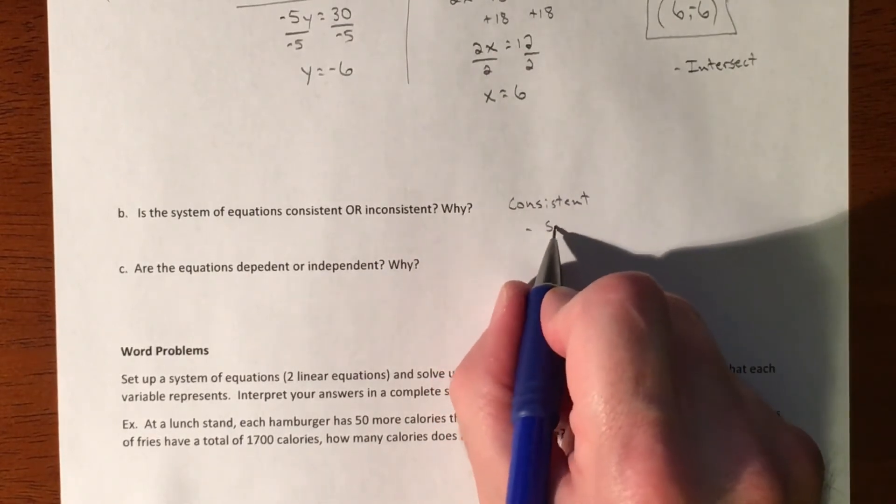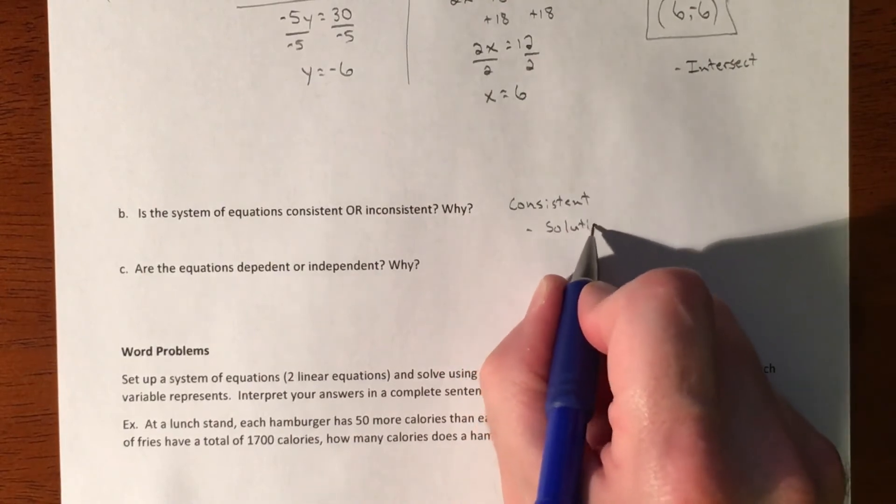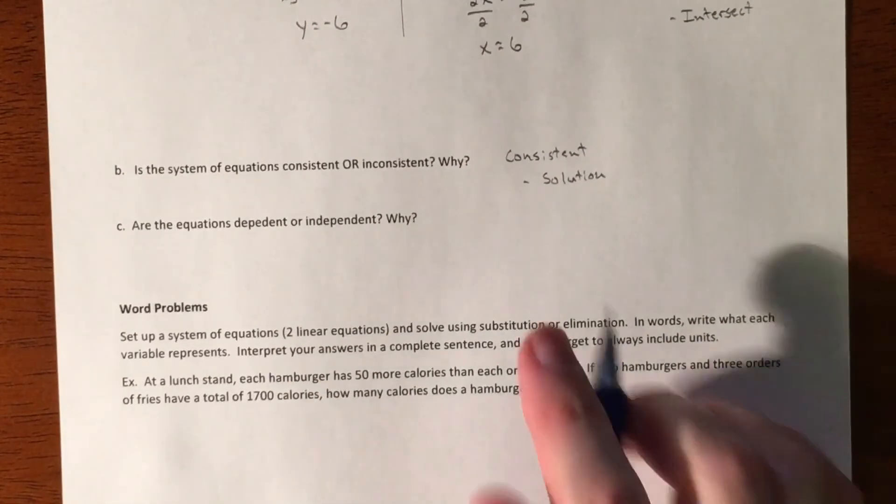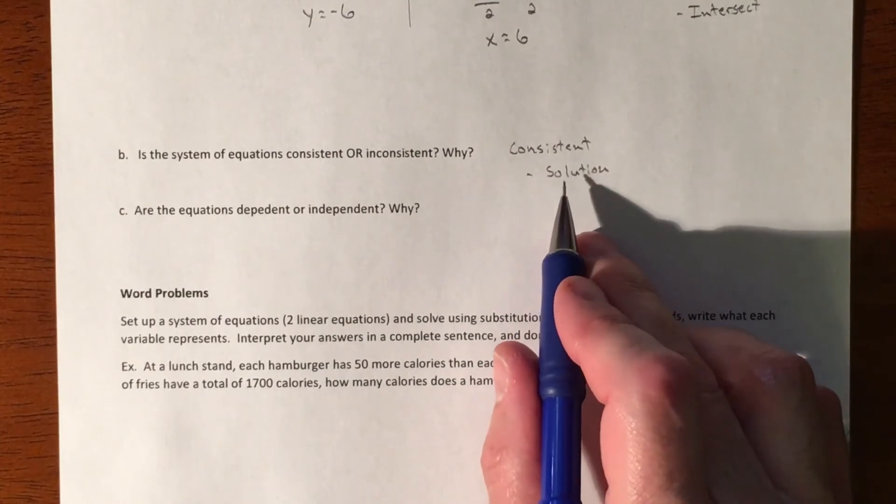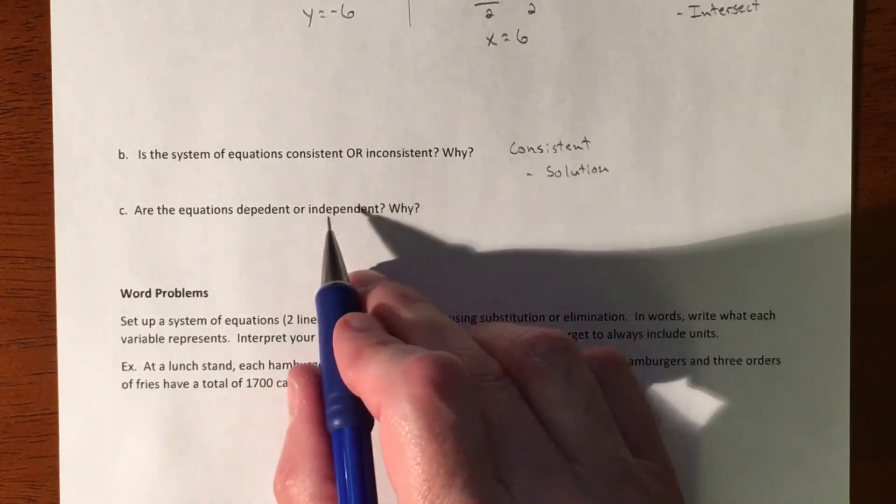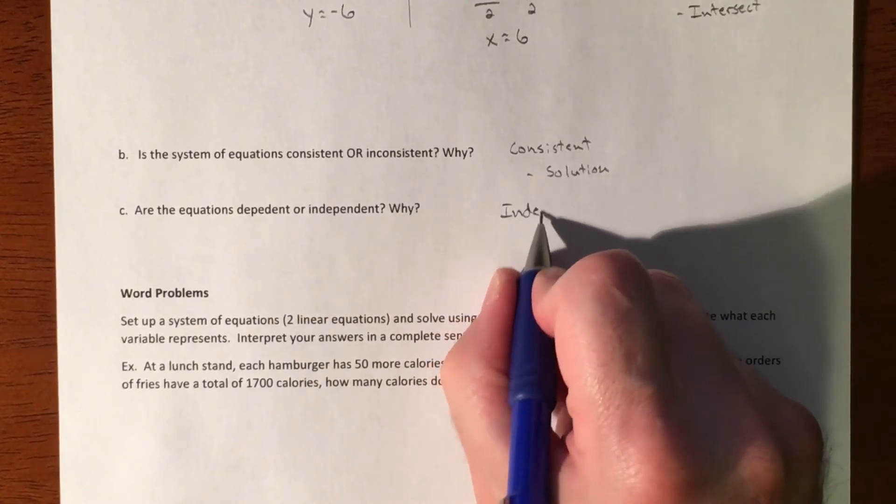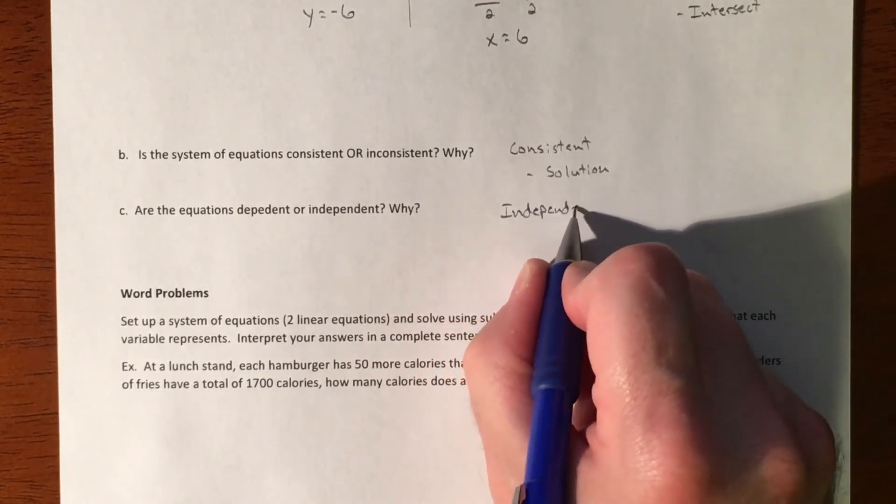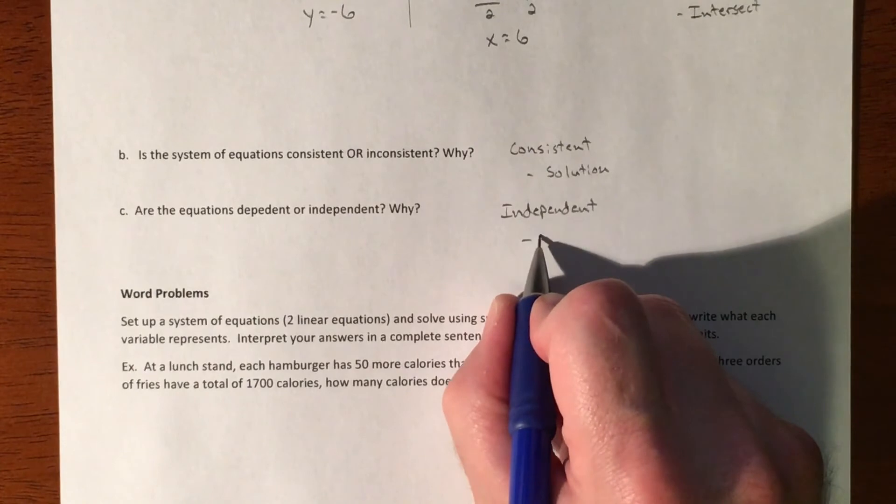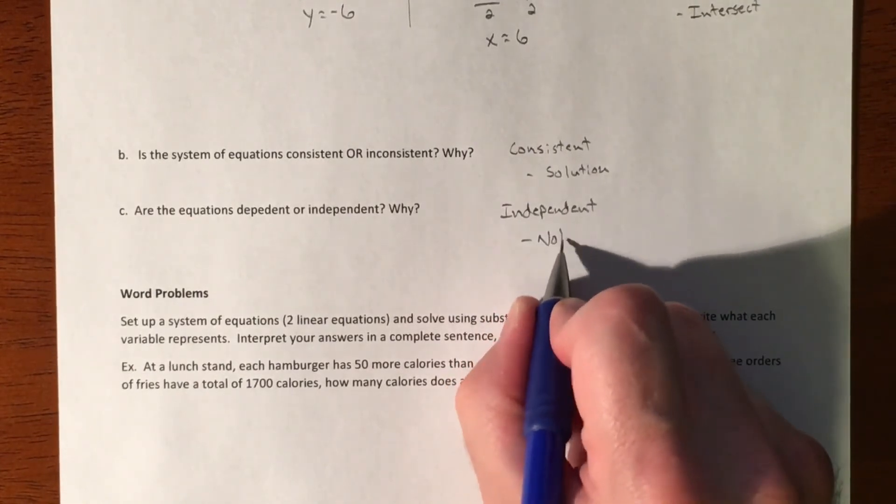And why? Because we have a solution. Inconsistent is no solution, but we have two different kinds of solutions - either we have one solution or infinite solutions. We only have one, so it's independent. And it's because they are not multiples of each other.